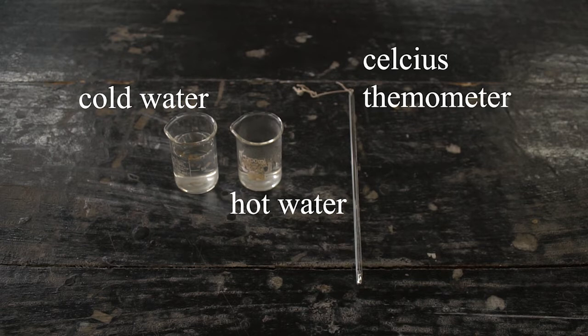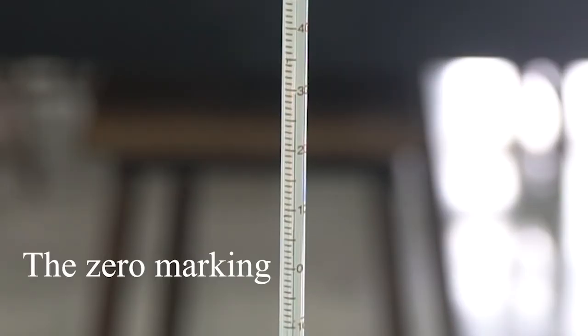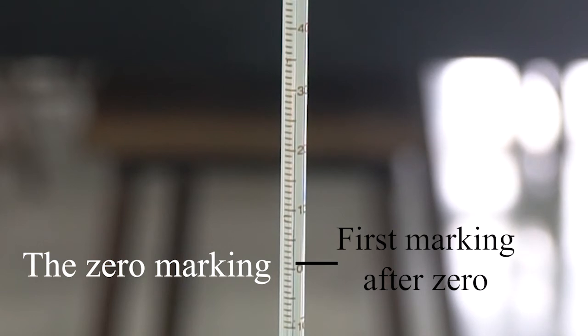As we've mentioned before, we have to always find the least count of any measuring instrument when we are performing a measurement-based experiment. So if you take a closer look at the thermometer, the first thing we need to do is find the zero marking and then find the next numbered marking. There are ten divisions between zero and the next numbered marking, which means the first marking will represent one degree Celsius.